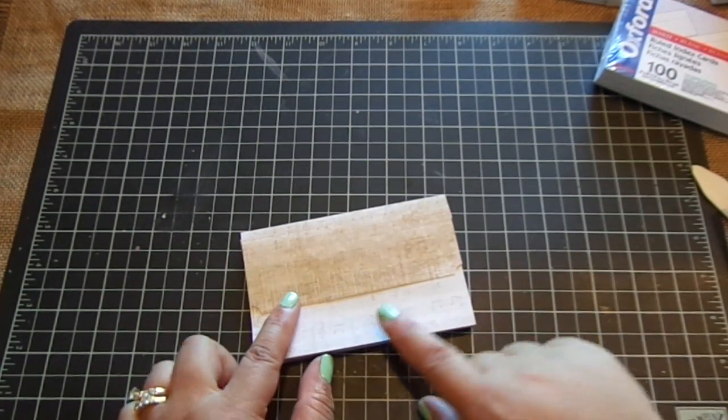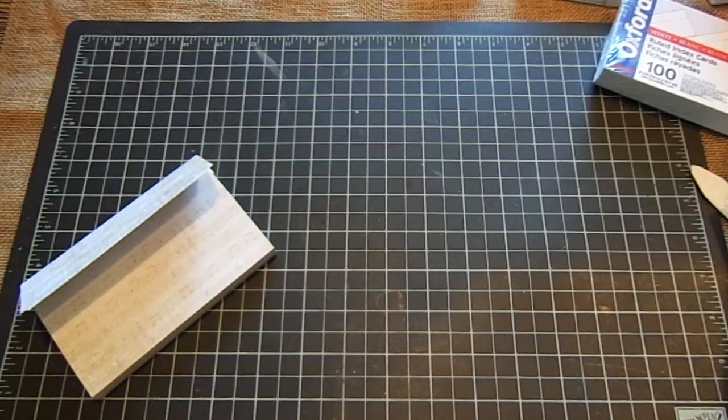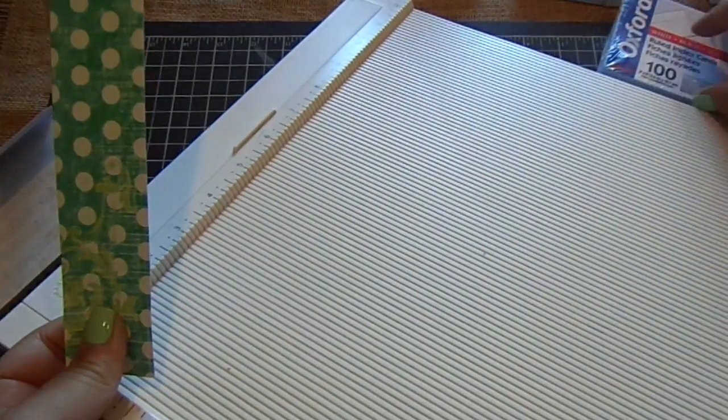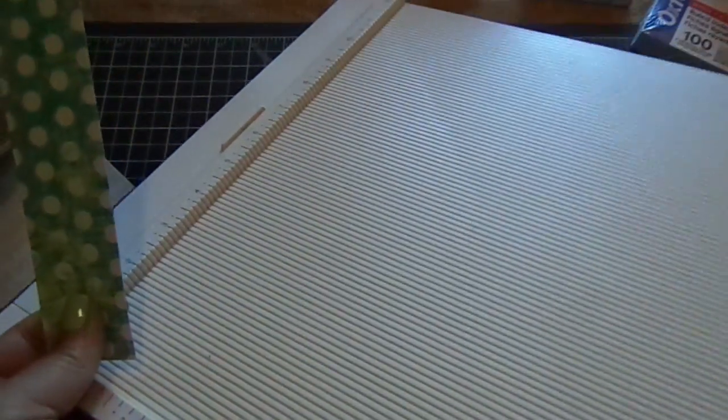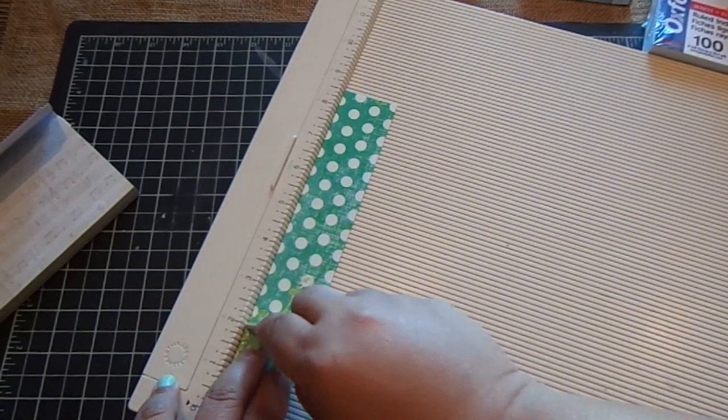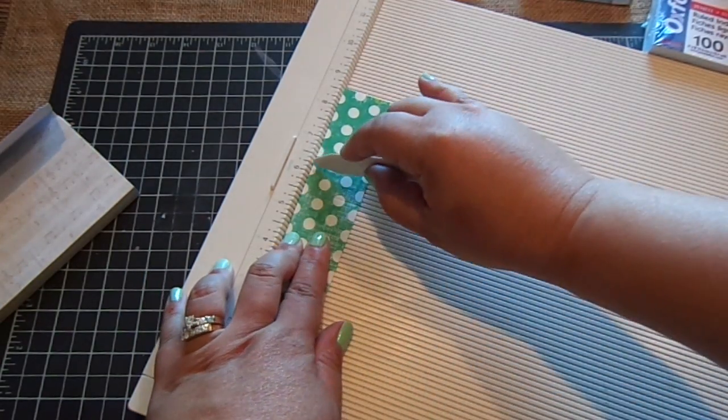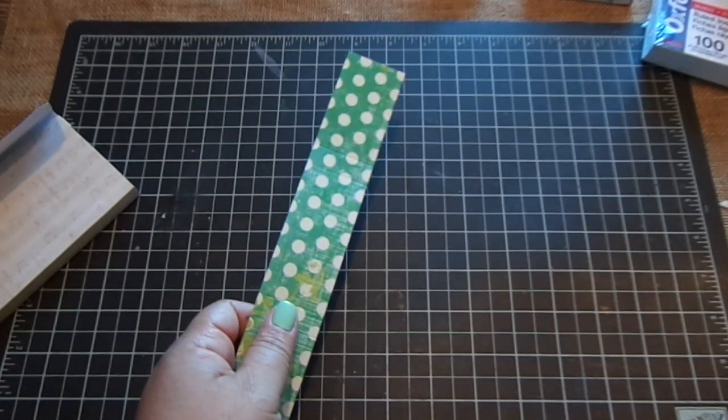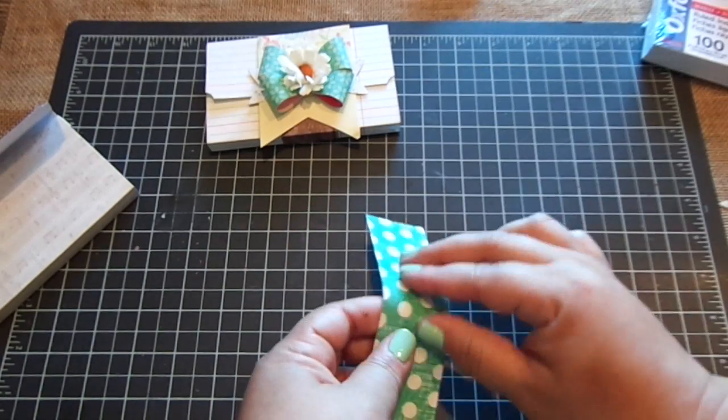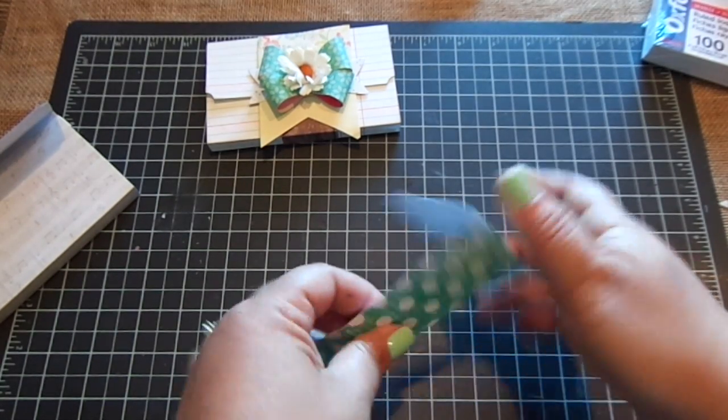And now we're going to make a belly band. You can use Velcro for the closure or little magnets for the closure. So the belly band. Let's get back my board here. This again measures one and a half by eight and five eighths. And on the eight and five eighths, you're going to score it at two. Two and a half. Five and five eighths. And six and one eighths. And then you can add any embellishment on the front. And you can see here I just add some bows. So just fold those.